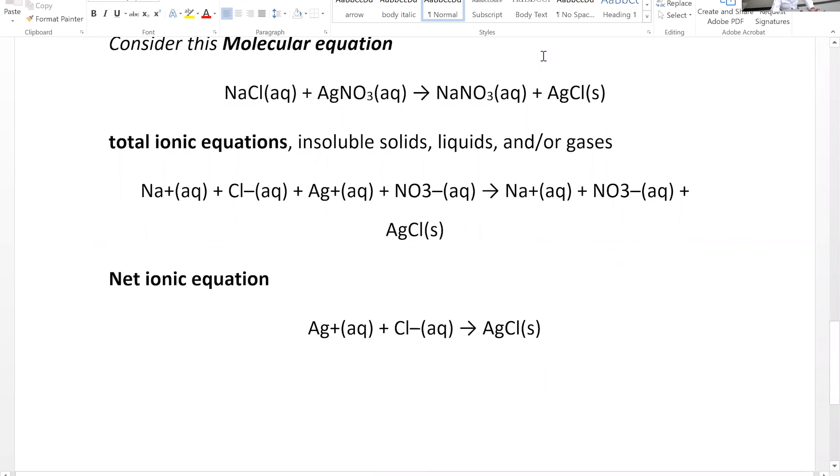A net ionic equation, however, is going to result after you cancel spectator ions. What are spectator ions? Anything that appears exactly the same way on both sides of the equation. So I have spectator sodium ion and I have spectator nitrate ion.